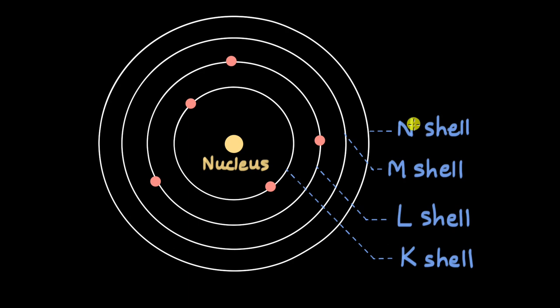If there are more orbits, it would go even further. We can even assign numbers to them. The first orbit is n equals 1. This is n equals 2, 3, 4 and so on.